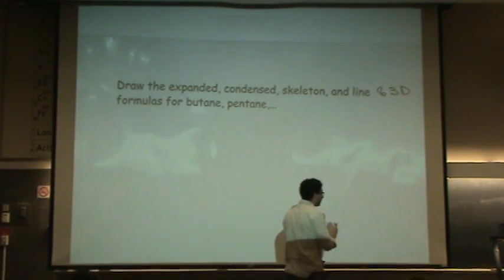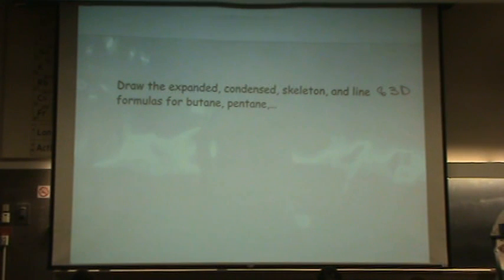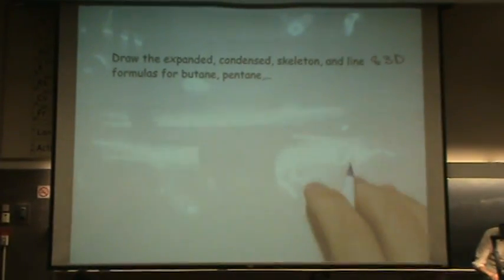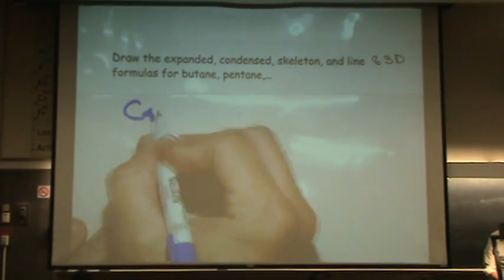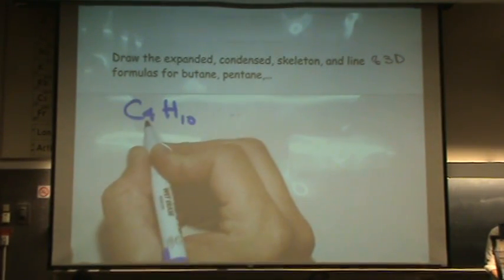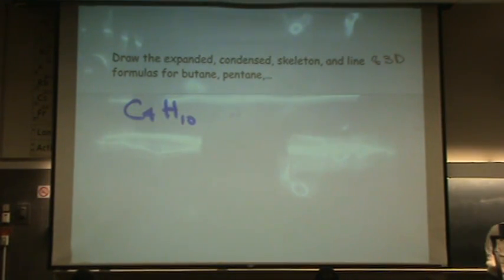We're going to draw all these ways of representing butane. Butane would be C4H10. Remember it's CnH2n+2 for the hydrogen.